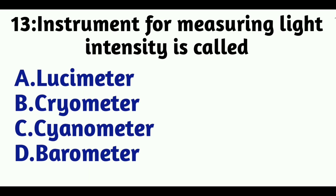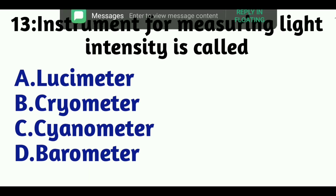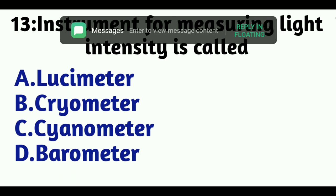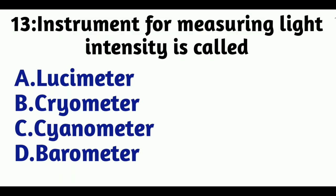Question 13: The instrument for measuring light intensity is called — Option A: Lucimeter, Option B: Cryometer, Option C: Cyanometer, Option D: Barometer. The answer is Option A, Lucimeter.